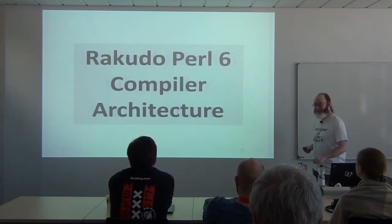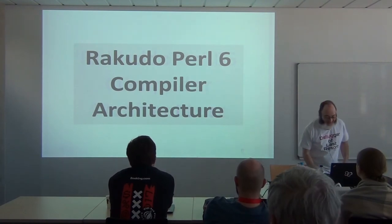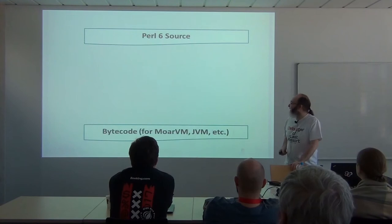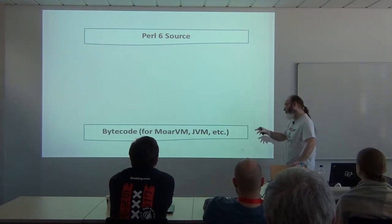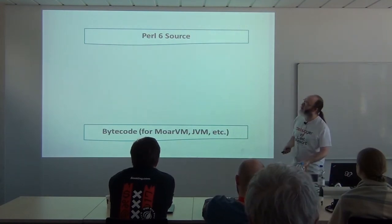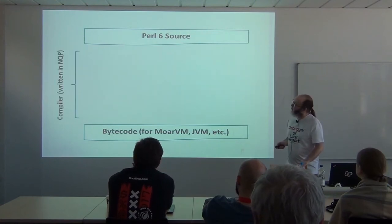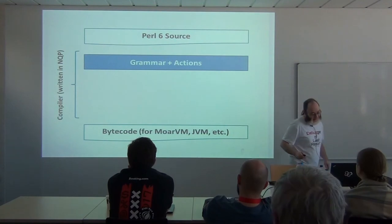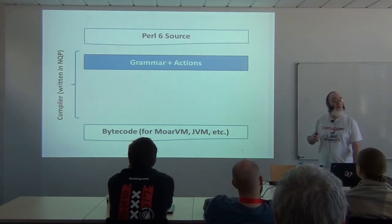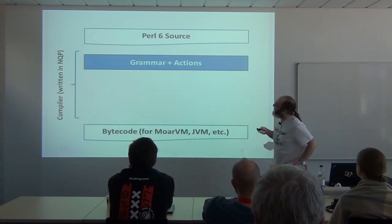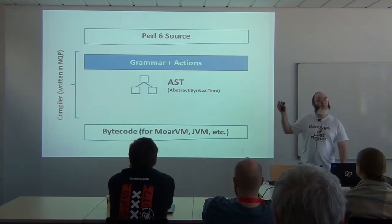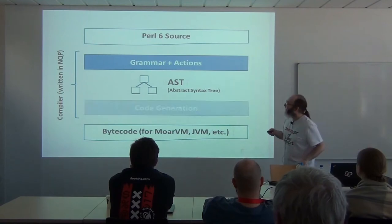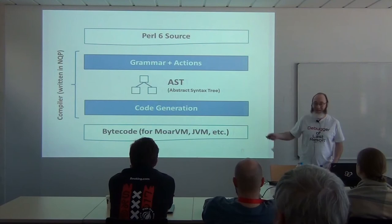Let me step back and talk about the compiler architecture. You take your source code, throw it at the Perl 6 compiler, and the compiler's job is to produce bytecode for a virtual machine — today I'll focus on MoarVM, which we built specially for Perl 6. The source code goes into the grammar for syntax and parsing, then through actions that build up an abstract syntax tree describing what the program should do. In Perl 6 there are lots of ways to write, say, a pair, but all of them compile into the same-looking tree.